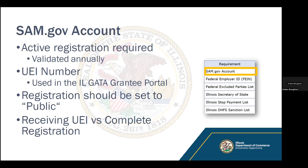You need to have an active SAM.gov registration — this is the federal System of Award Management. It needs to be validated annually. Make sure your registration is set to public, not private, to ensure SAM.gov can sync properly with the GATA grantee portal. When registering, you'll receive a UEI number — a Unique Entity Identifier — which you use in the GATA grantee portal. However, receiving the UEI is not the end of the registration; there are more steps involved, and you need a complete registration to fulfill this requirement.